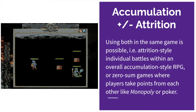Most games aren't purely one or the other — you can have both accumulation and attrition scoring in the same game. They can be nested inside each other in RPGs like Loop Hero, where the overall trajectory is to gather different resource points and build up your base, accumulation style, but within that, the individual expeditions and battles are attrition style, where you try to knock health points off enemy monsters without losing all of your own. Most video games do both to some extent, but you can generally class a given game as primarily attrition or primarily accumulation in terms of the overall play experience and which numbers actually determine the result in the end.